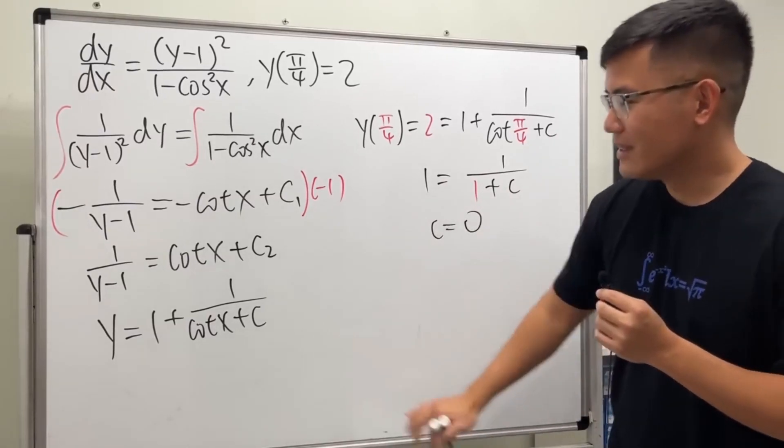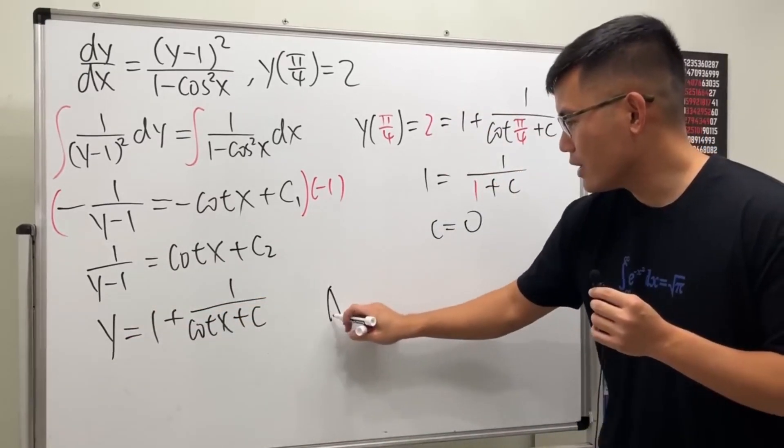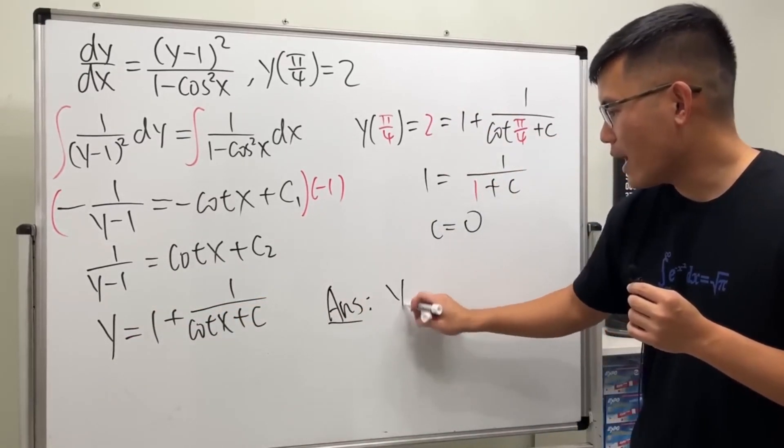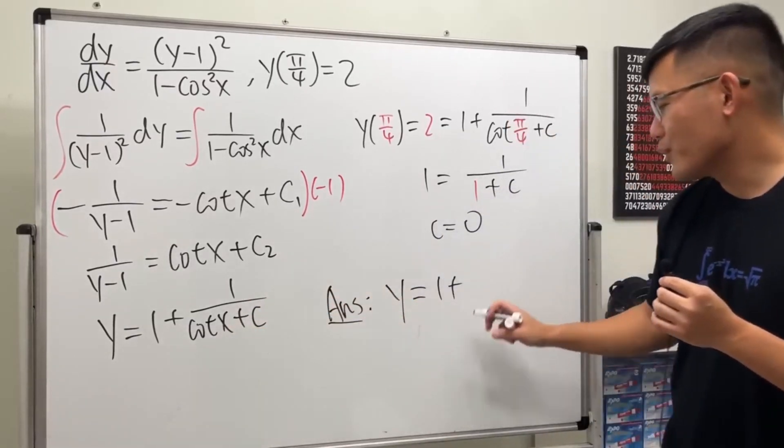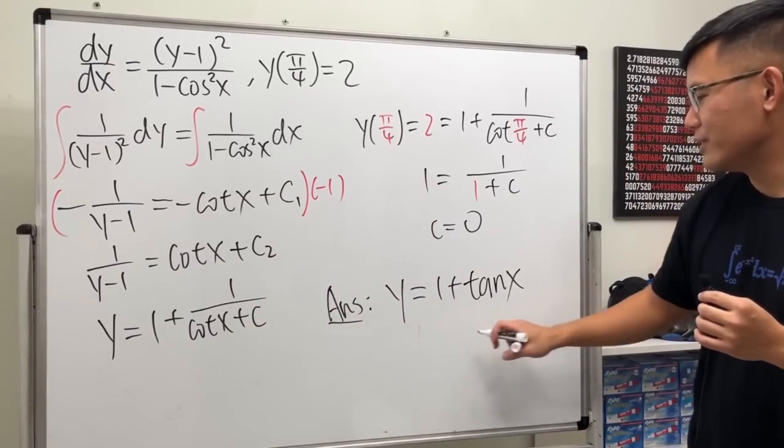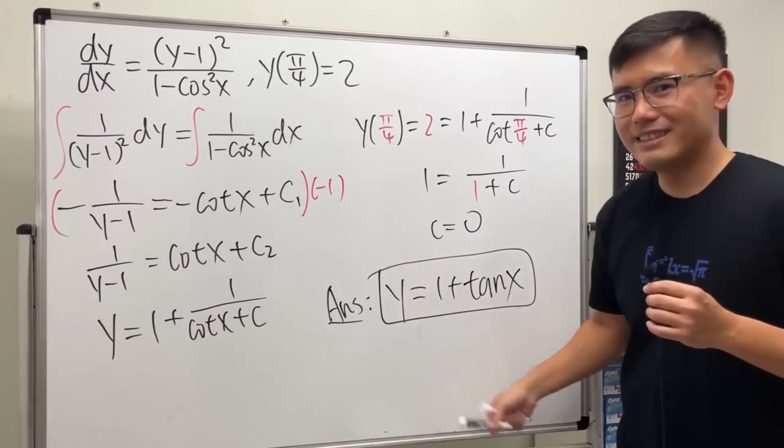Then there we have it. We don't have the C, so the answer is y = 1 + 1/cot x, and of course that's the same as 1 + tan x. We are done!